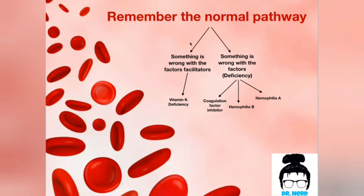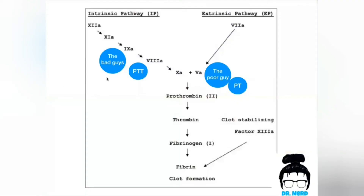Now, what would cause an abnormality in secondary hemostasis? Either there is something wrong with the factors — they are deficient — or there is something wrong with the facilitators. In each pathway, we have facilitators that will help the pathway move forward.